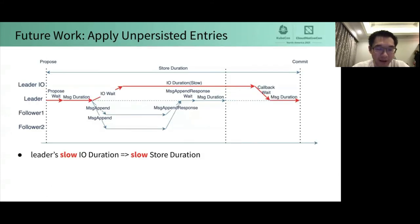Next, let's talk about the future work. That is to apply unpersisted entries. As mentioned before, store duration is the time between proposed and commit of a proposal. Actually, it's not accurate. The exact definition is the time between when a proposal is proposed to when it's committed and persisted. As shown in the figure, the leader's IO encountered a tail latency, and the two followers respond to the leader with message append response earlier.